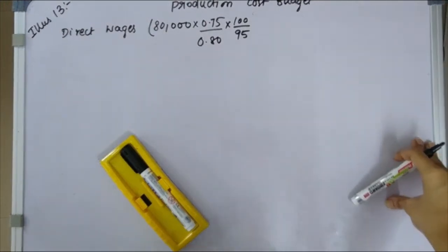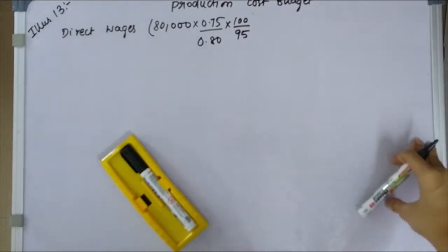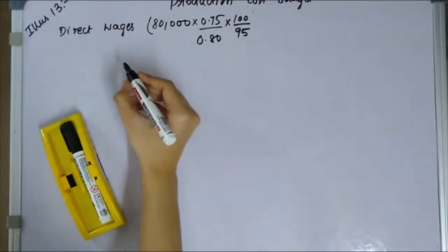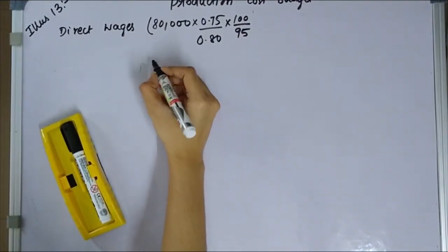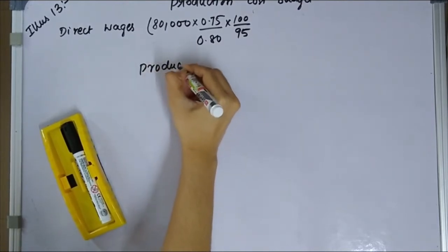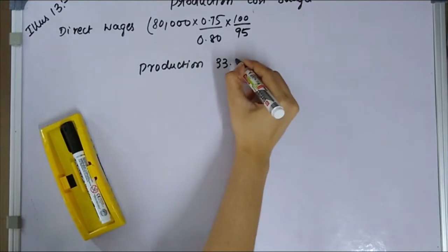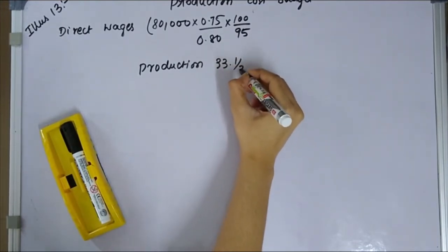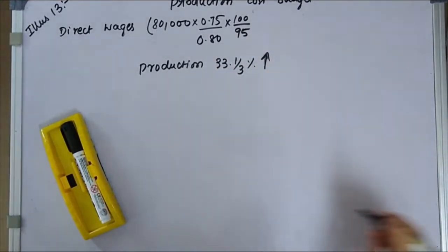Production in the coming year will increase by 33⅓ percent. So production will increase in the upcoming year by 33⅓ percent.